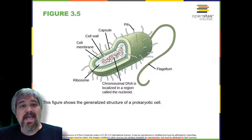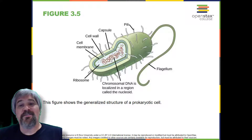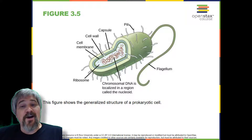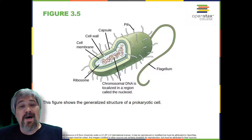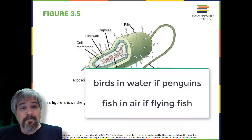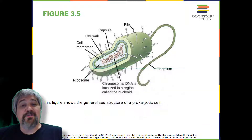Eukaryotic cells. In nature, the relationship between form and function is apparent at all levels, including the level of the cell, and this will become clear as we explore eukaryotic cells. The principle "form follows function" is found in many contexts. For example, birds and fish have streamlined bodies that allow them to move quickly through the medium in which they live, be it air or water. In general, one can deduce the function of a structure by looking at its form, because the two are matched.